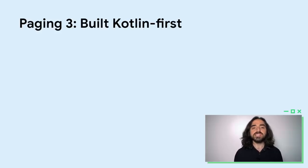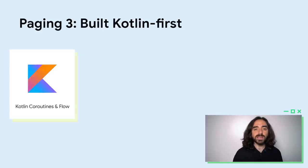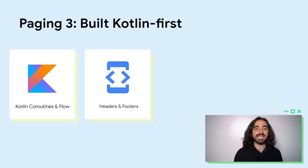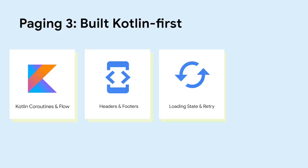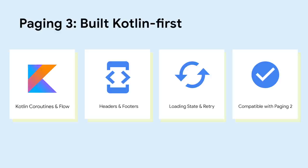To recap: Paging 3 is rewritten from the ground up with Kotlin coroutines and Flow. It has built-in APIs to add headers, footers, or separators, and you can do other transformations like mapping or filtering items. It adds new APIs to observe the loading state, with methods to retry or refresh. Paging 3 is fully backwards compatible with Paging 2 to help you migrate easily. It is available as alpha now — please check it out and let us know what you think.